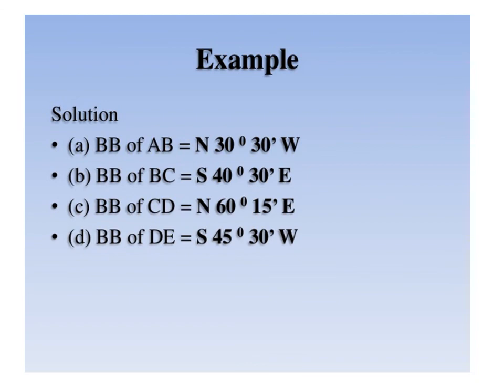This slide shows how to calculate the forward bearing of a line when back bearings in the quadrantal system are given. We change the quadrant to the opposite one. Back bearing of AB is N 30 degrees 30 minutes west, so the forward bearing of AB is S 30 degrees 30 minutes east. For BC, back bearing gives forward bearing N 40 degrees 30 minutes west. For CD, forward bearing is S 60 degrees 15 minutes west. For DE, the forward bearing is N 45 degrees 30 minutes east.